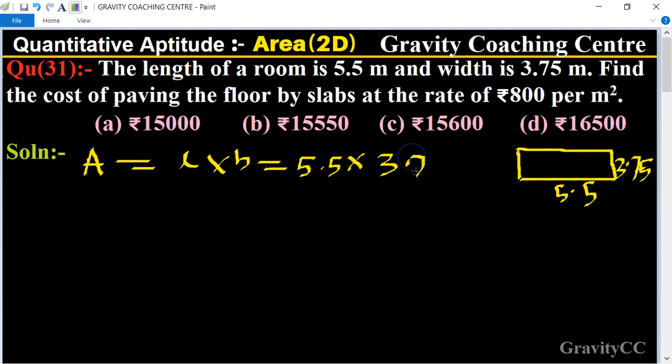The product is 20.625 square meters. The cost of paving one square meter is rupees 800.